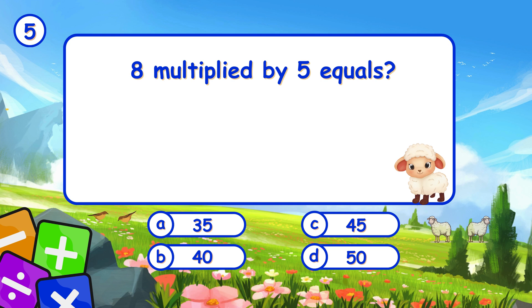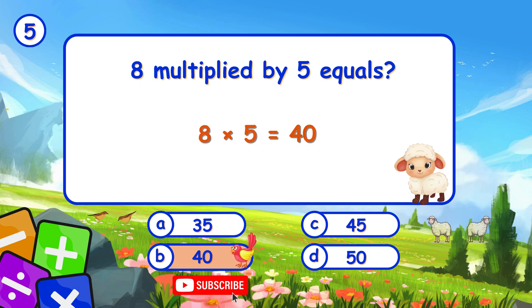8 multiplied by 5 equals... It's B, 40. 8 times 5 is 40.